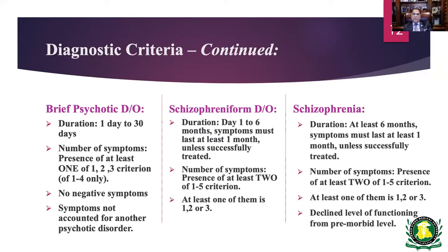Why have three different names for the same illness? Because of prognosis. Only 50% of brief psychotic disorder patients progress to schizophrenia. Once they reach schizophreniform stage after six months, 80% will become schizophrenic and 20% will achieve complete remission. If we started with 100 patients on day one, by day 31 only 50 would remain, and six months later only 40 would become schizophrenic. Waiting allows a much lower final incidence of schizophrenia.